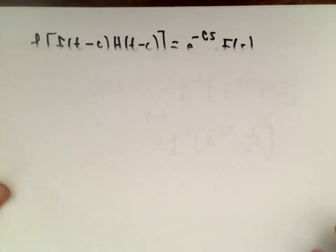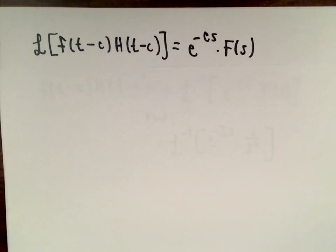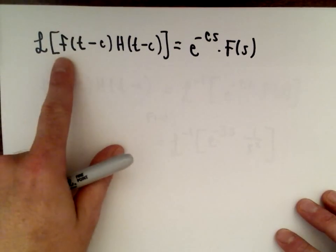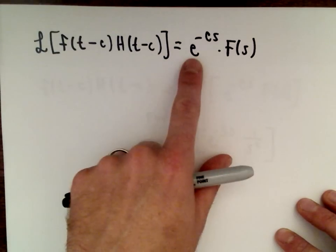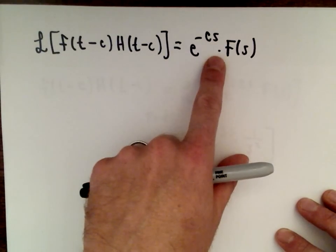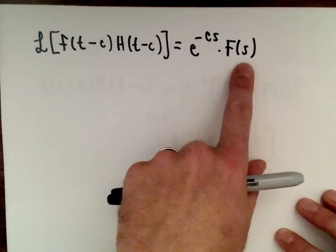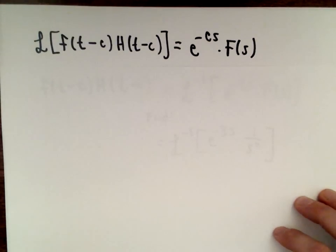I've jotted down a couple things here. Just the formula which we proved in a different video. The Laplace transform of f(t-c) multiplied by H(t-c), we said that's equal to e to the negative cs multiplied by F(s). And again, H is our Heaviside function.